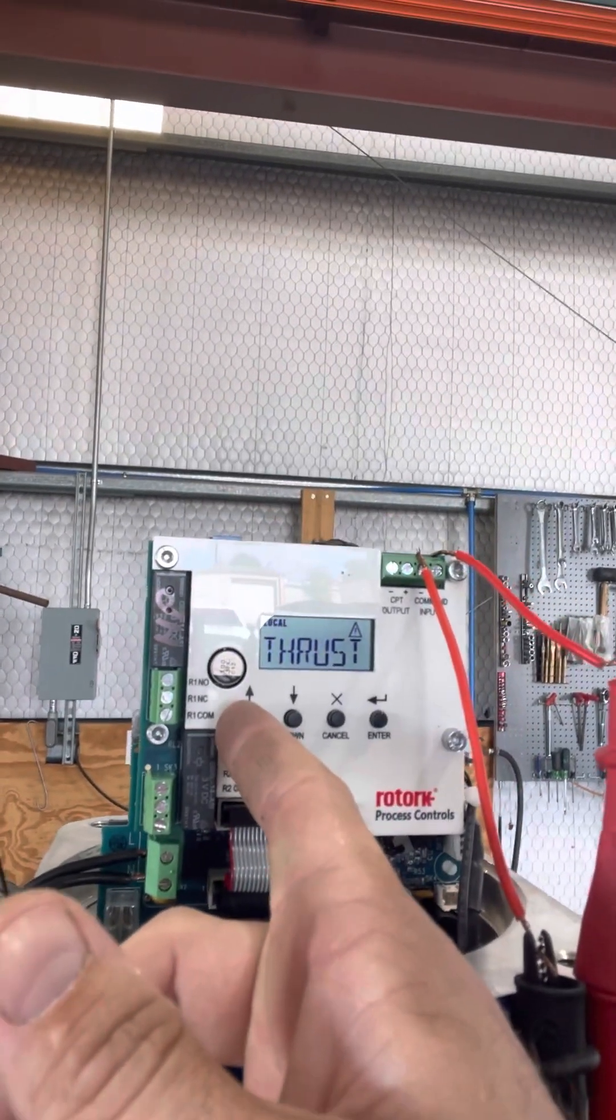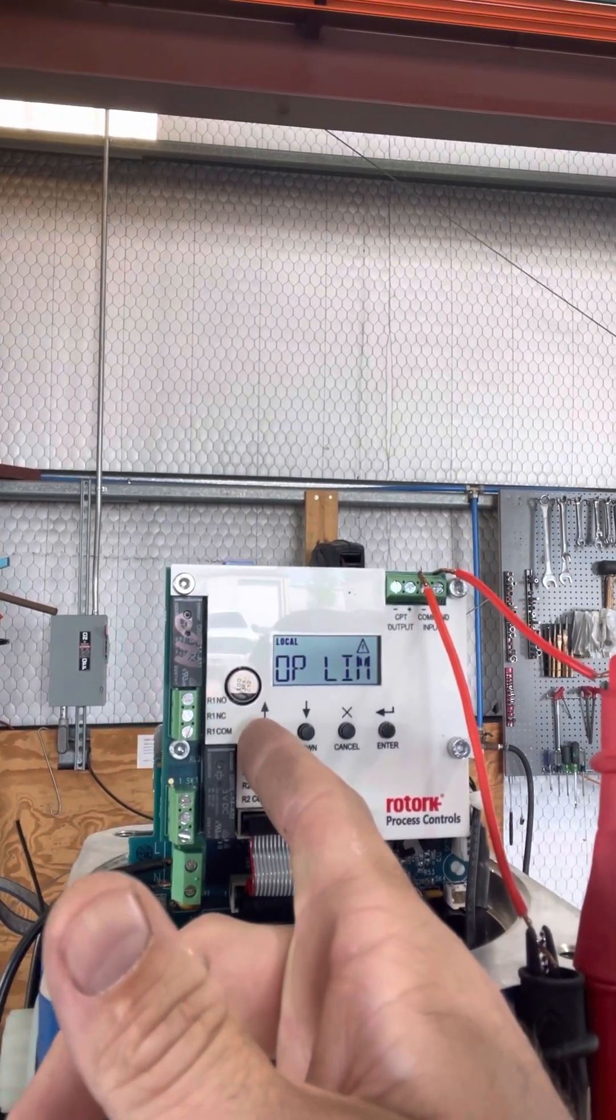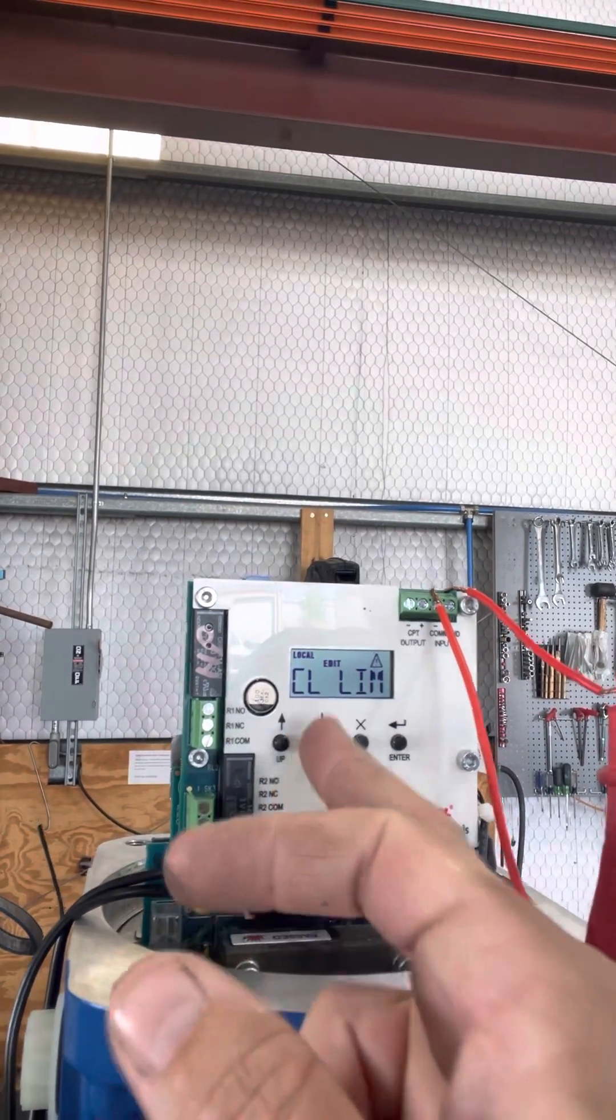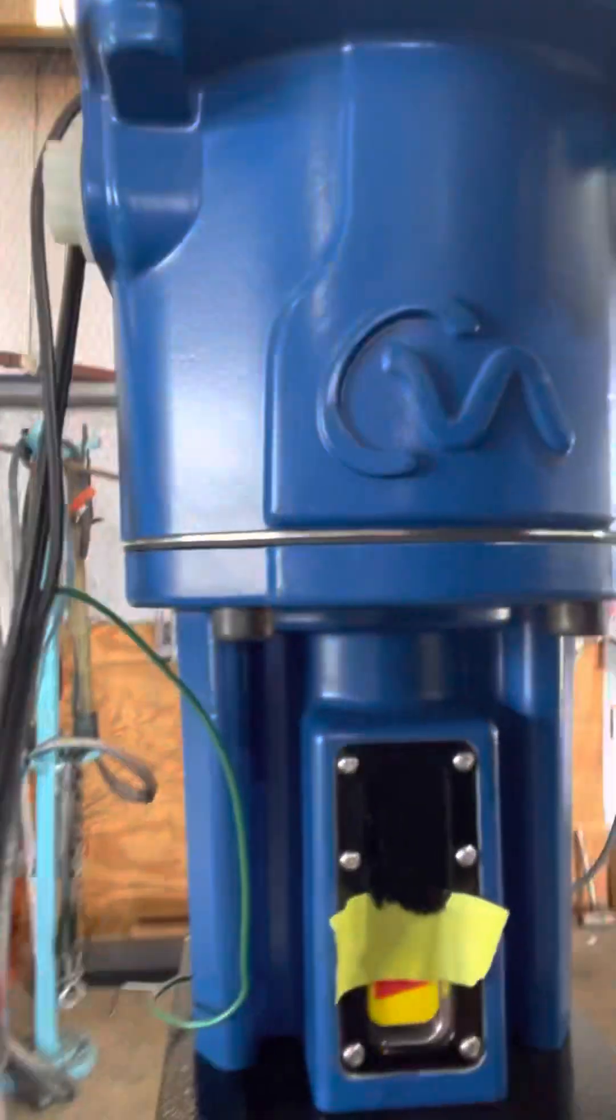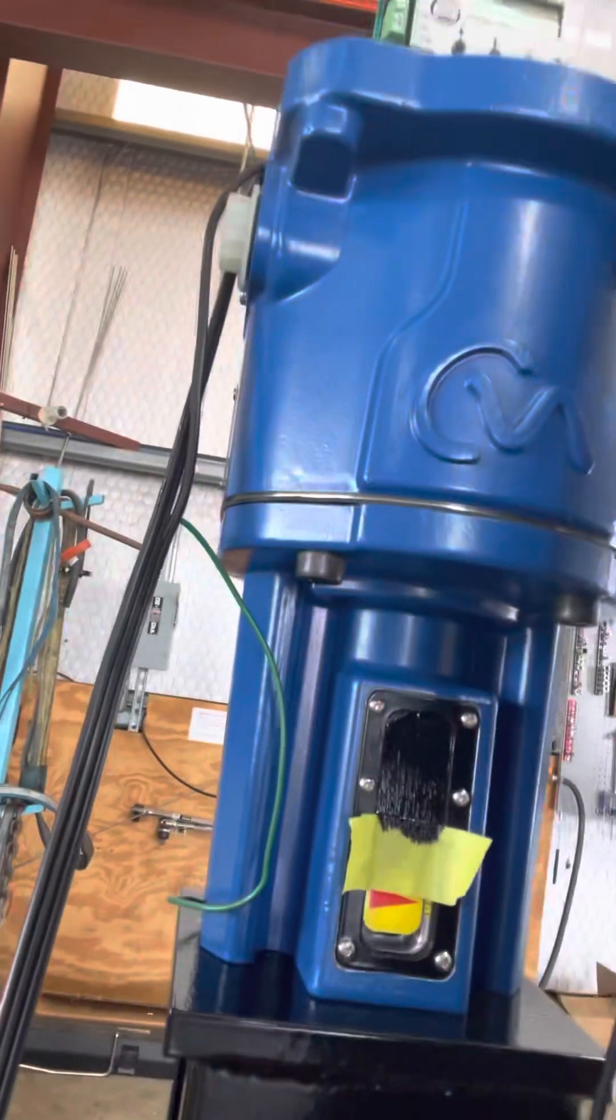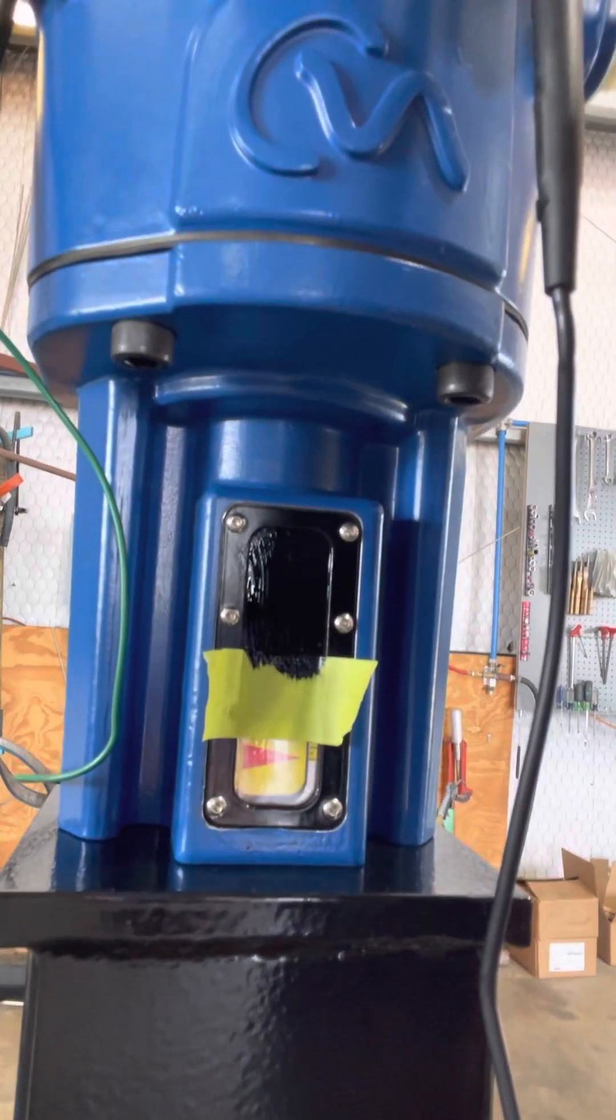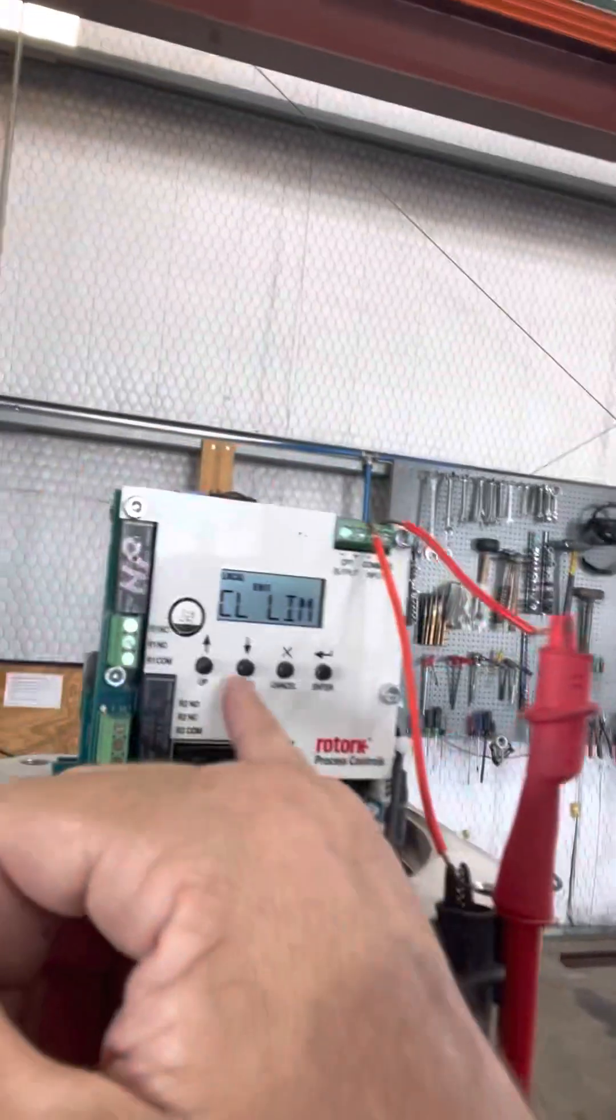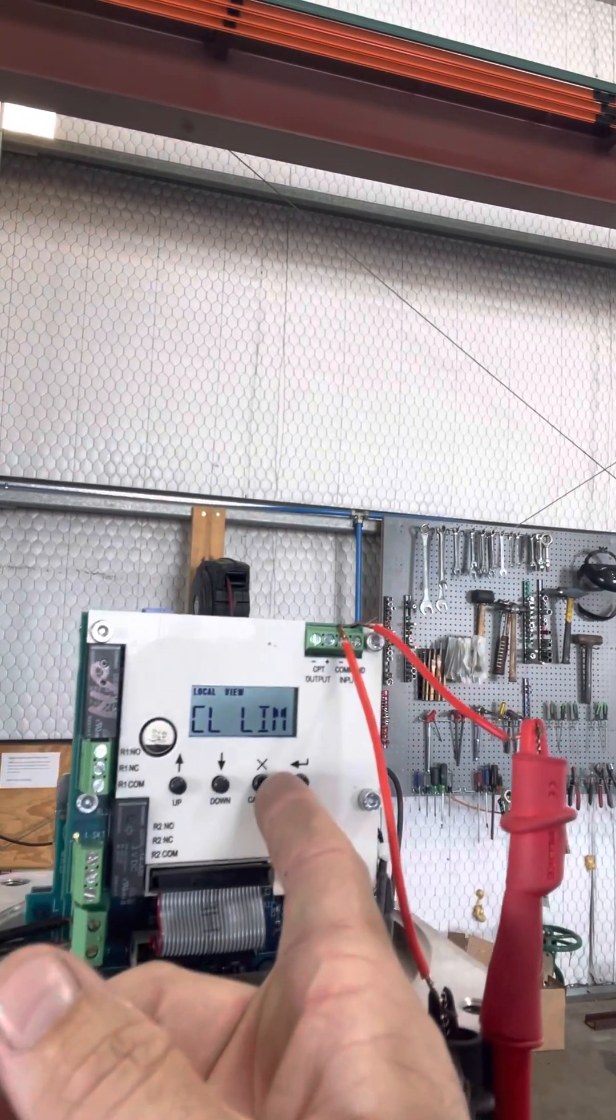So now you're in local remote. You got to hit exit or the cancel button to cancel and be able to go through the menu. So what we're going to do here is we're going to set our closed limit. Now you would hit enter, enter, go to edit. Now you can press the up button, it travels up. Down button travels down. Behind this, we taped it off because we're painting it. There's a travel scale, you can kind of see it there at the bottom. So you can see right there, I stroked it to the closed position. So now that we're in the closed position, we hit enter, saved. Now we back out of that and hit back again.